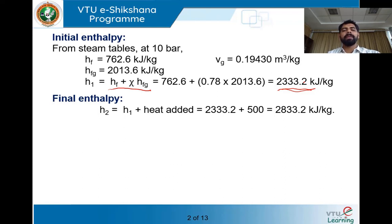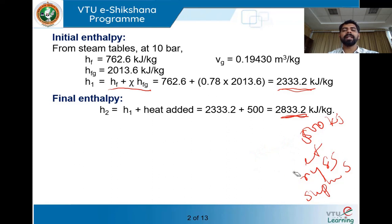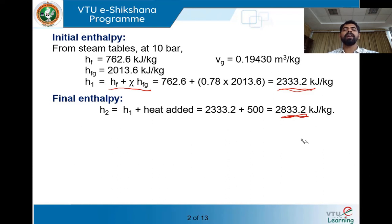Now we find the final enthalpy H2 after adding 500 kJ of heat. Initial enthalpy is 2333.2 kJ/kg and adding 500 kJ gives: H2 = 2333.2 + 500 = 2833.2 kJ/kg. After adding the heat, we need to check whether the steam is still wet, or has become dry saturated, or superheated. Before adding heat it was a wet steam with x = 0.78; after adding 500 kJ, the enthalpy is 2833.2 kJ/kg.